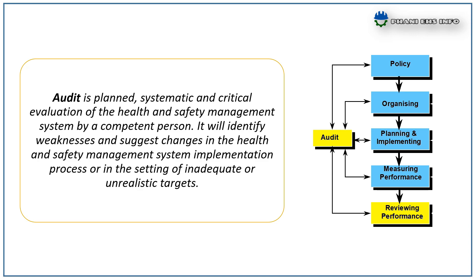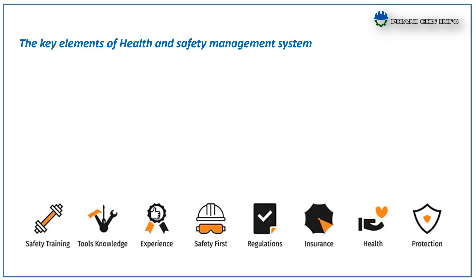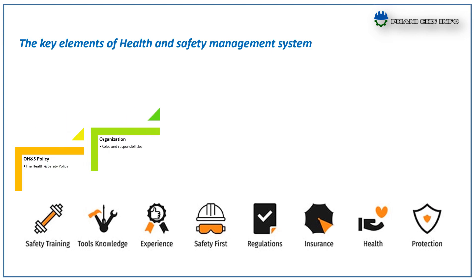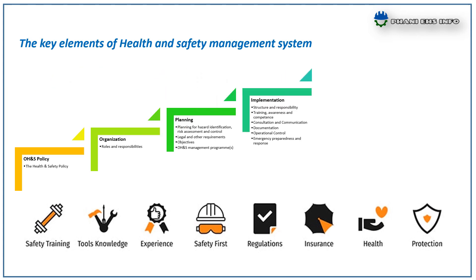This is about safety management system and its key elements. Let me summarize the key elements of the health and safety management system: HSE Policy; Organization, which includes roles and responsibilities; Planning, which includes hazard identification, risk assessments, legal requirements, site programs, etc.; and Implementation, which includes training, communication, documentation, emergency preparedness, etc.